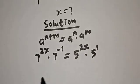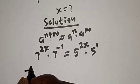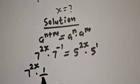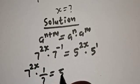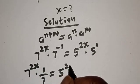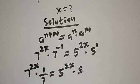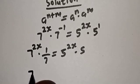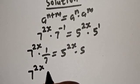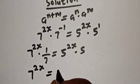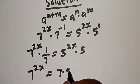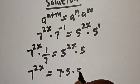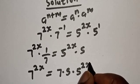From here, we have 7 raised to power 2s multiplied by 1 over 7 is equal to 5 raised to power 2s multiplied by 5. Then, if you cross multiply, we have 7 raised to power 2s is equal to 7 multiplied by 5, then multiplied by 5 raised to power 2s.